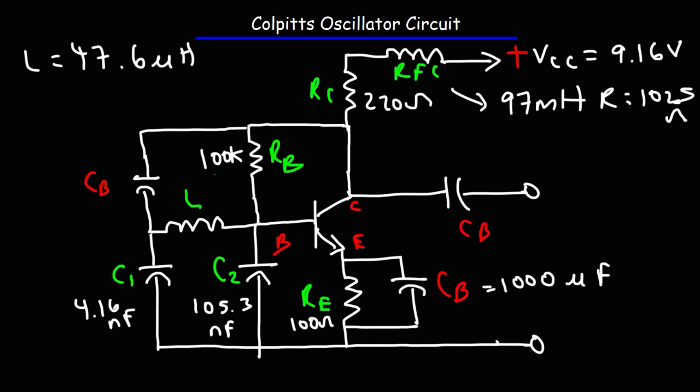So at these values, I got a nice sine wave at the output. It's a very smooth sine wave with a frequency, a measured frequency of 364.3 kilohertz. The output voltage was about 7 volts peak to peak. So that's not the RMS voltage. At the top was positive 7, and at the bottom, negative 7.